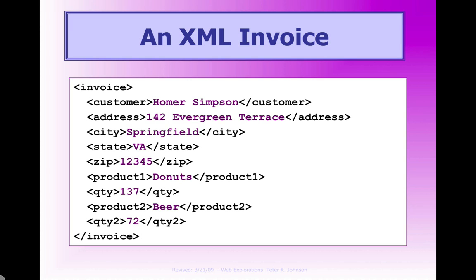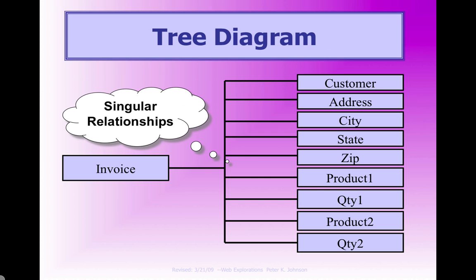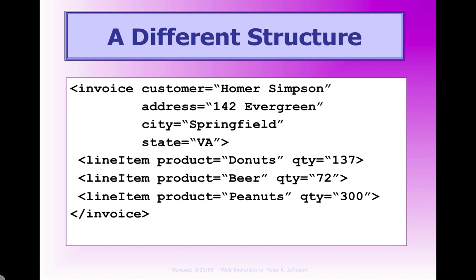This is kind of what someone first learning XML would do — this is how they would lay out an XML document. We have a singular relationship, so we have the invoice which is the root, and then we have each of the nodes building a tree off of that root, and each one has its own data. Now here's a different way to look at XML, and that's using attributes. So we set up one element, which is invoice, and then we put the repetitive data or the common data to the document as attributes. So we set up customer, address, city, and state.